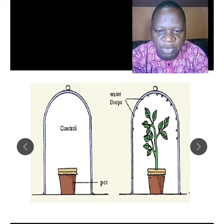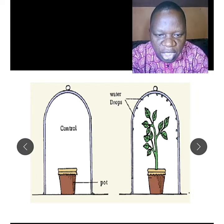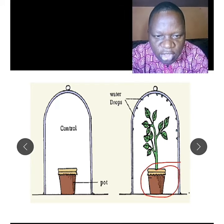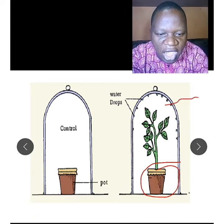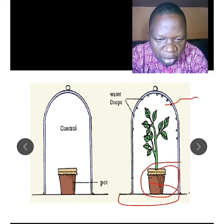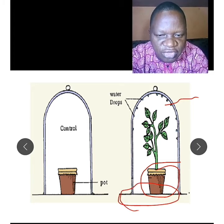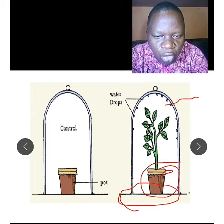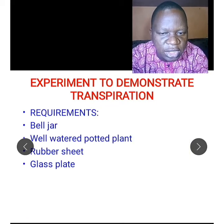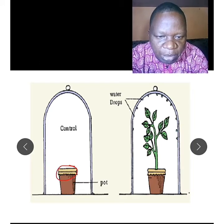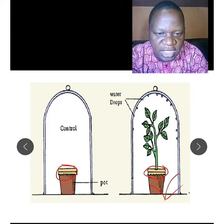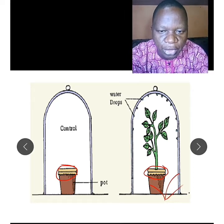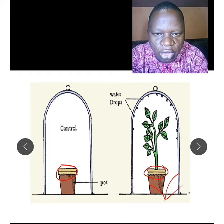Looking at the setup: you can see the plant inside the pot, the bell jar placed over it, the glass plate beneath, and a rubber sheet used to cover the roots of the plant. The rubber sheet prevents water from evaporating from the roots, so it does not affect the results of the experiment.